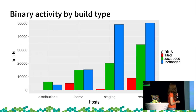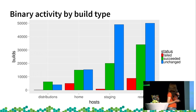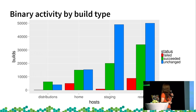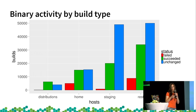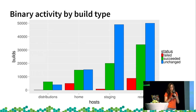We can see some curious things: staging is the one that fails least compared with the rest, and the distribution is the one that changes most — when we build it, we usually have to update the result because it changed.